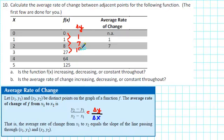As we move from 27 to 64, the change is 64 minus 27, which is 37. And as we move from 64 to 125, the change is 125 minus 64, which is 61.